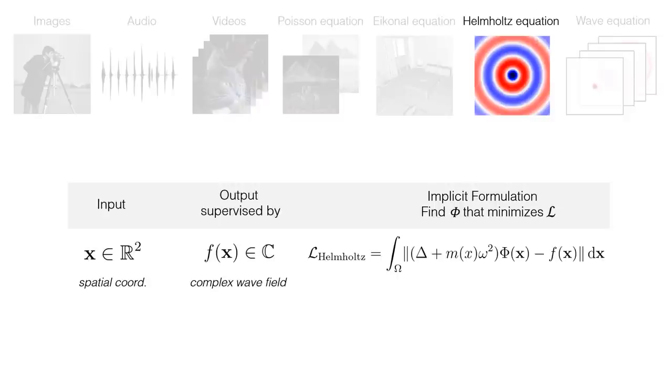In this case, the output of SIREN is a complex number, represented by two network outputs for the real and imaginary parts. Again, we note that we do not supervise SIREN with the ground truth values of the wave fields. Rather, we interact with phi only via the constraints on the first and second order derivatives defined by the Helmholtz equation.